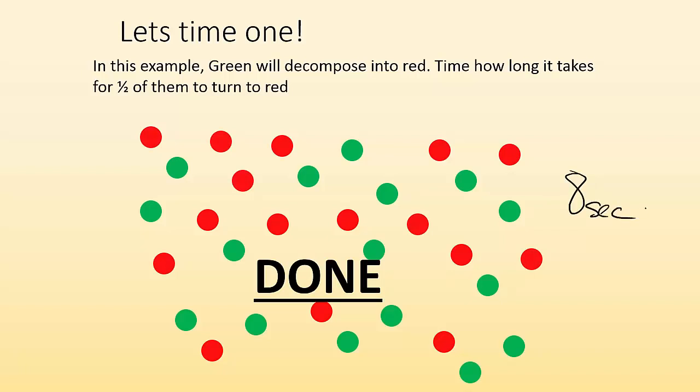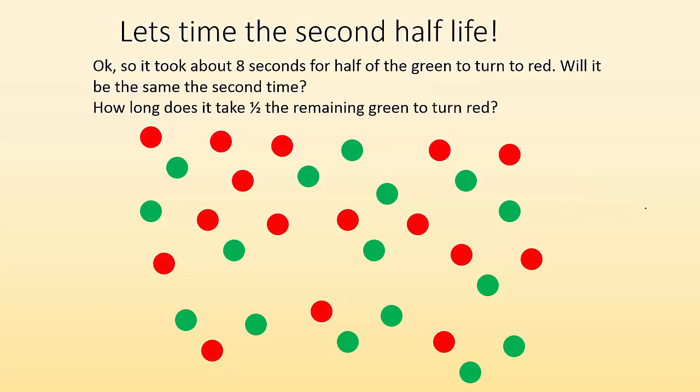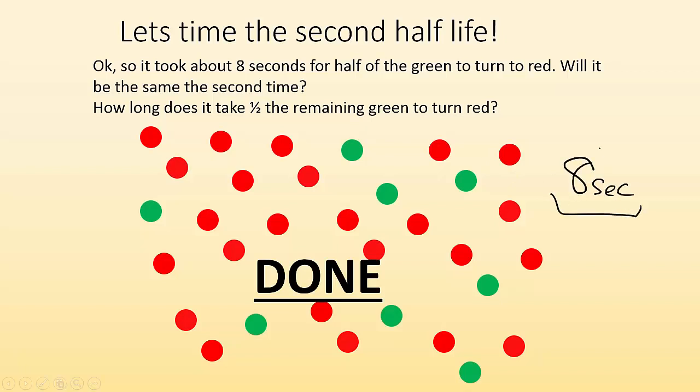All right, now that I have half of the greens left, how long will it take for half of those to decompose? So it took 8 seconds for the half-life of green to turn to red. Will it be the same the second time? Let's see. Ready? Go. 1,000, 2,000, 3,000, 4,000, 5,000, 6,000, 7,000, 8,000. Boom! It's 8 seconds still. So it's always going to be the same. Half-life doesn't matter how much stuff is there. If I were to do it again, it's still going to be 8 seconds.